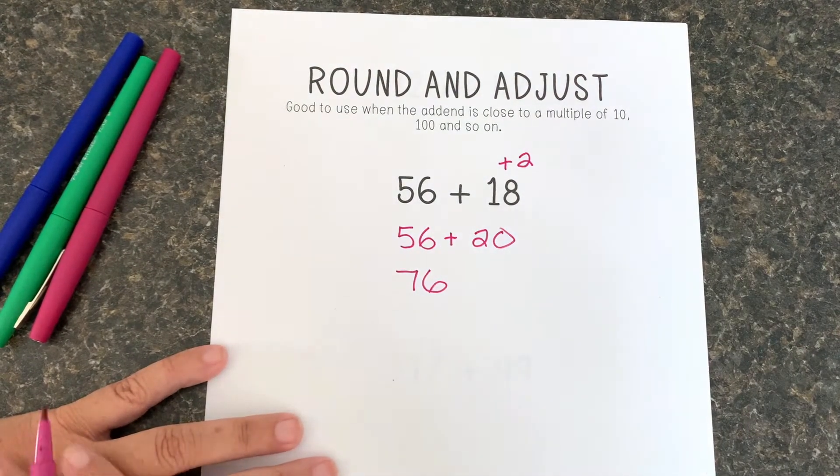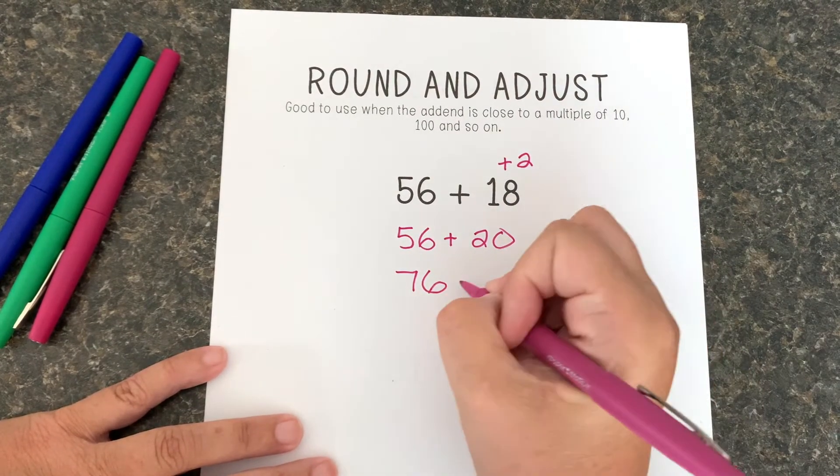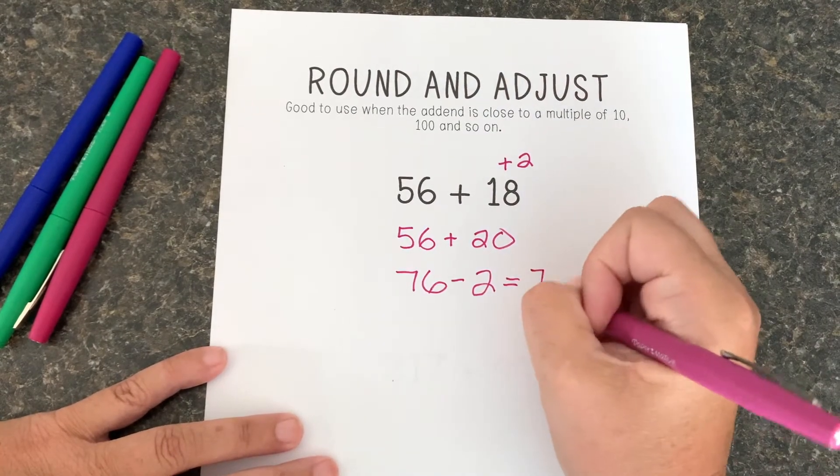So that was my rounding step, and now I have to adjust. So I added that 2 on, now I have to adjust and take that 2 off. And 76 take away 2 is 74.